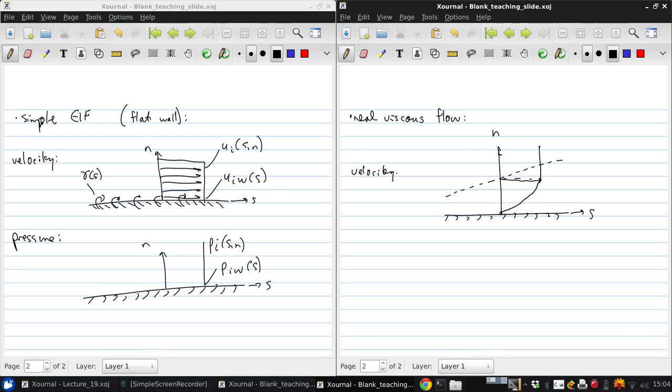There's the boundary layer thickness, above which the velocity is uniform. So we call this dashed line N, E of S, where the subscript E represents edge.